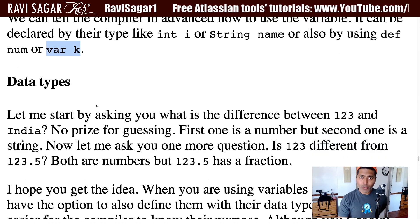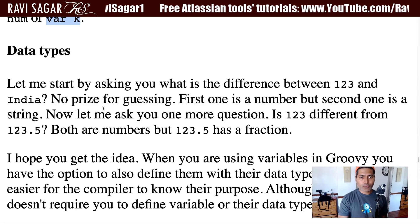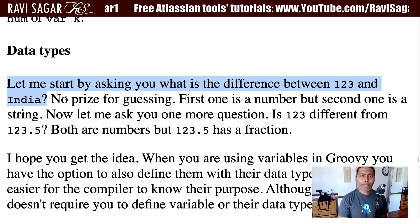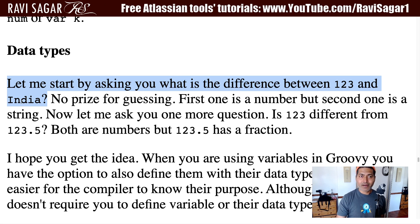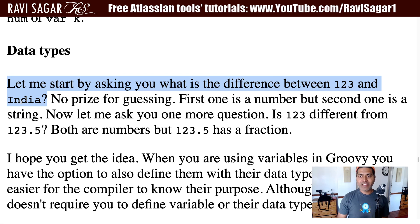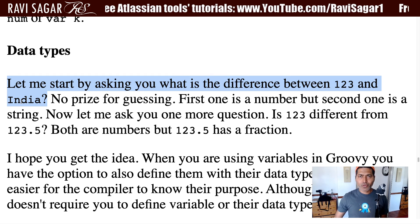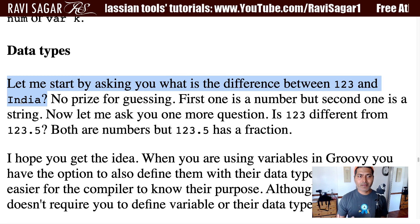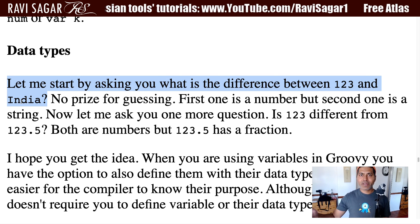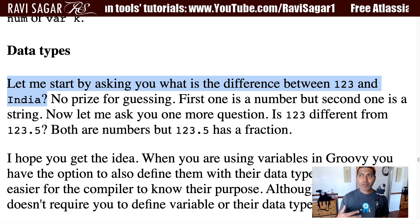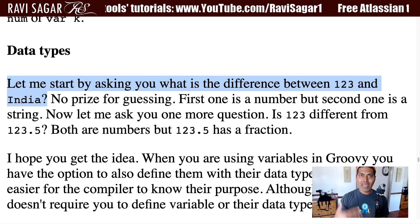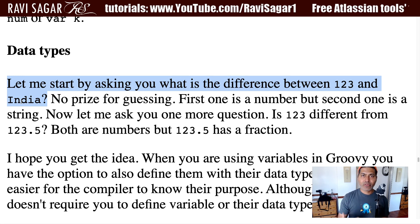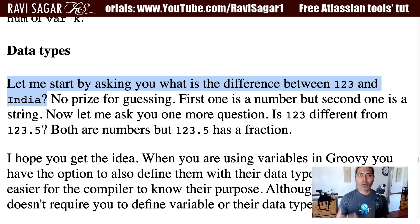Since we're talking about variable declarations, let us also talk briefly about data types. What is the difference between 123 and 'India', which is a string, or what is the difference between 123 and 'Ravi', which is a name? 123 is a number, and Ravi, India, London, or Delhi are names of people, places, cities, or countries. When you are storing these things in your code, you may be declaring them with the string or integer type. Based on what type of information you want to store or process, you would use the relevant data type.